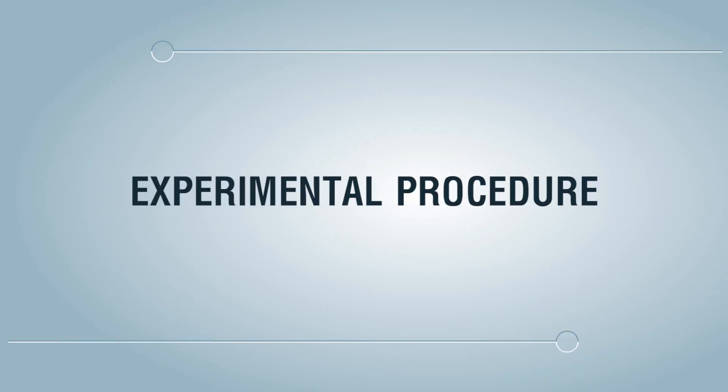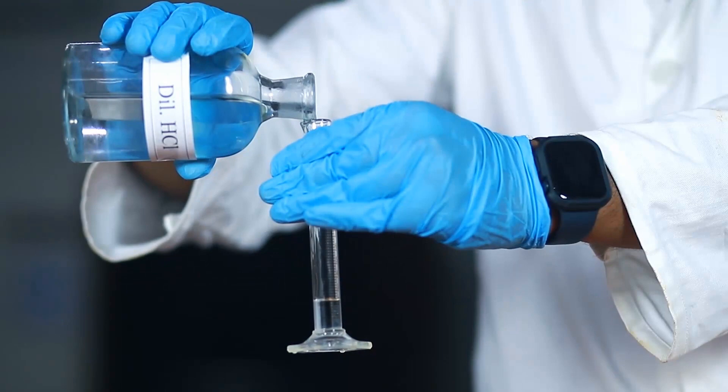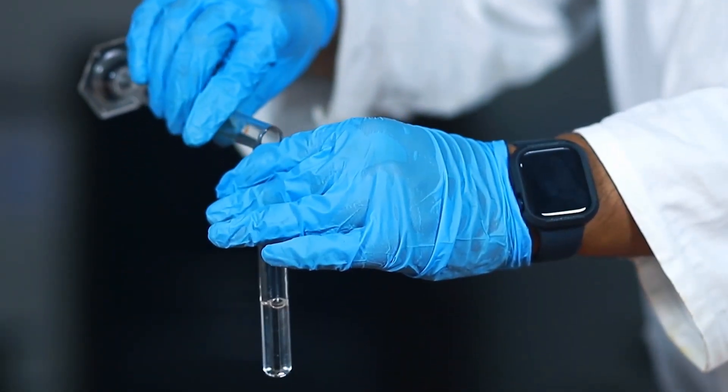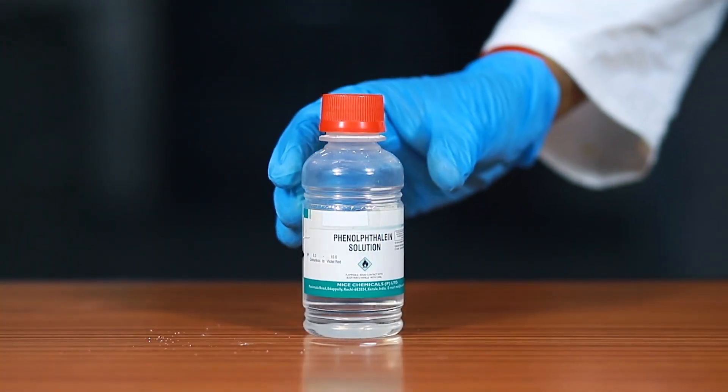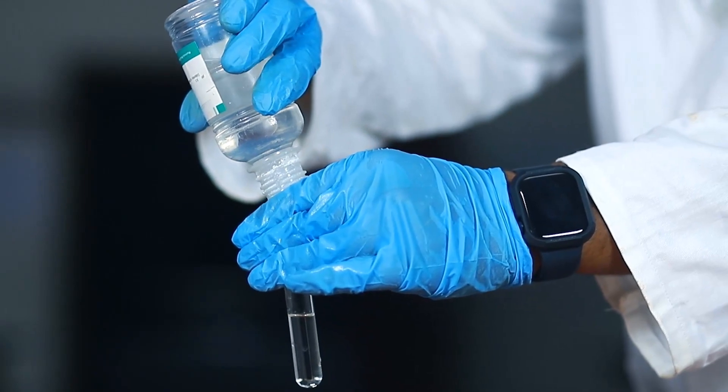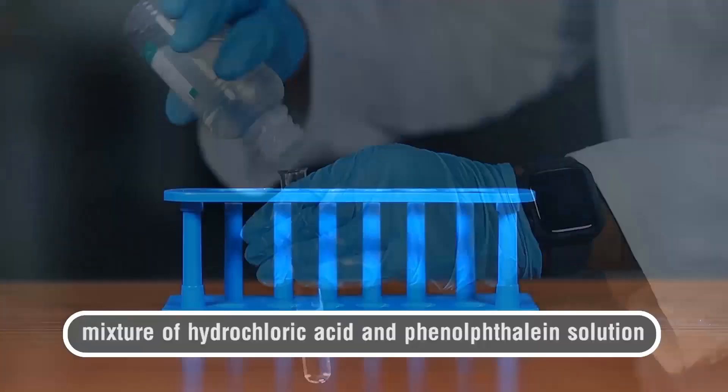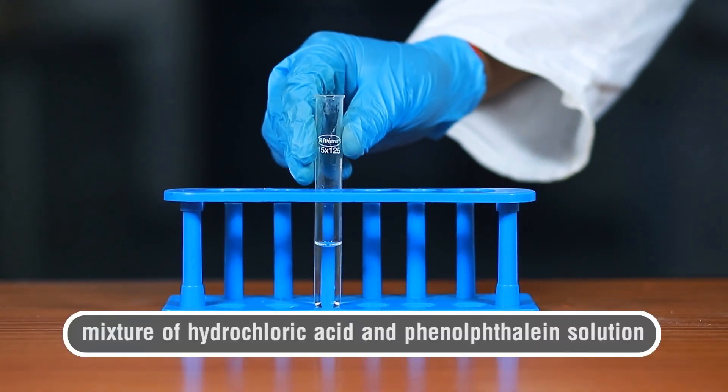Experimental procedure. Take about 5 ml of dilute hydrochloric acid in a test tube. Add 1 to 2 drops of phenolphthalein indicator to the solution and note down if any change in color.